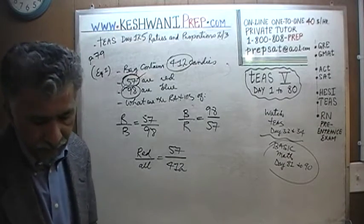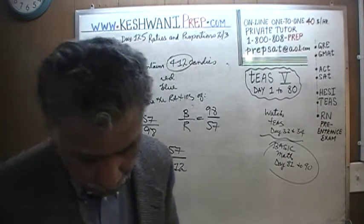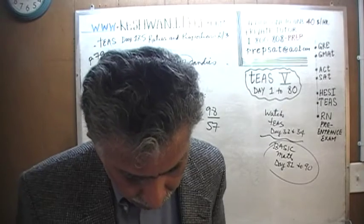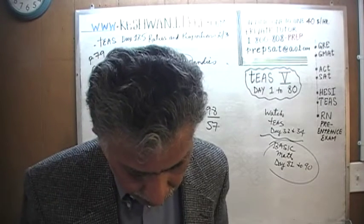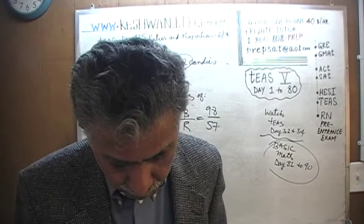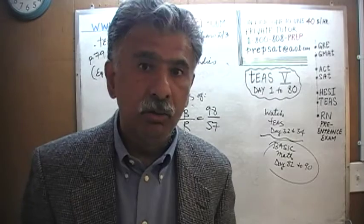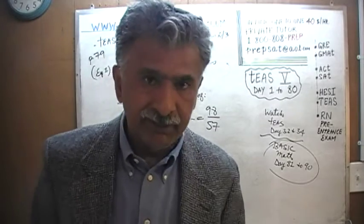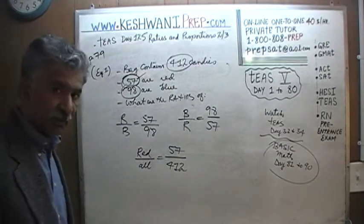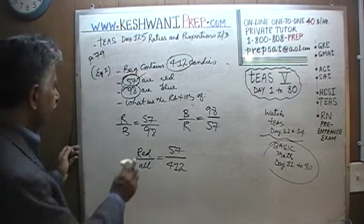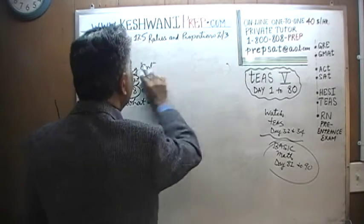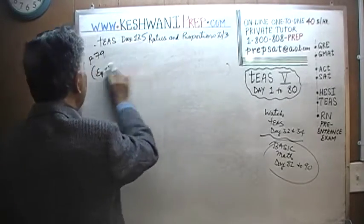The next problem, right underneath it on page 79, talks about Mike, who manages a small crew of men at a local utility company. That problem is also very straightforward.